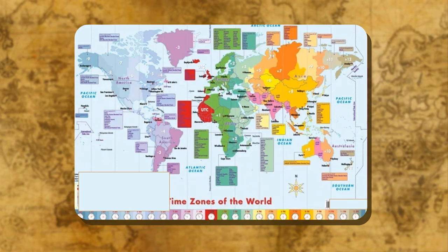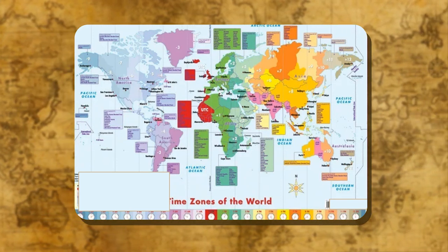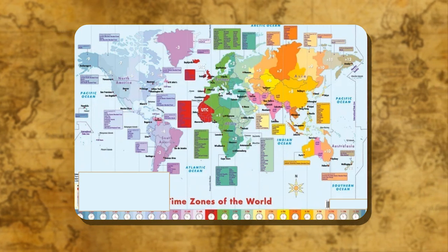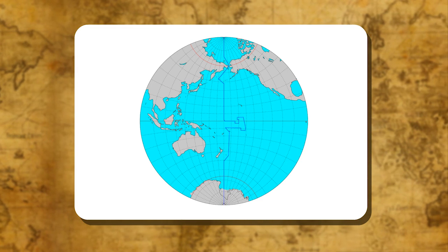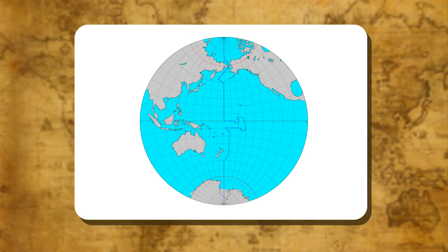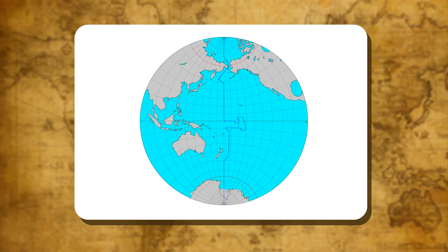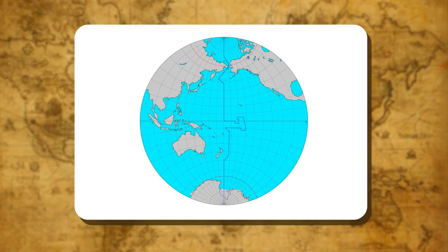Each zone covers 15 degrees of longitudes. The large countries which have a large east-west extent have more than one time zone. A time zone is a region covering 15 degrees of longitude and which takes 1 hour to pass in front of the sun. The whole world has 24 time zones.